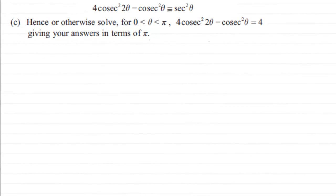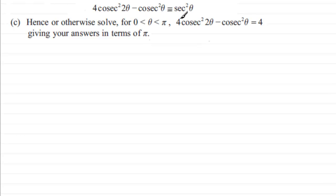Here we have an example on solving a trigonometric equation. In the previous part of this question we had to show that 4cos²(2θ) minus cos²(θ) was identical to sec²(θ). Now it says hence otherwise solve for θ greater than zero but less than π radians: 4cos²(2θ) minus cos²(θ) equals 4. We need to give our answers in terms of π.